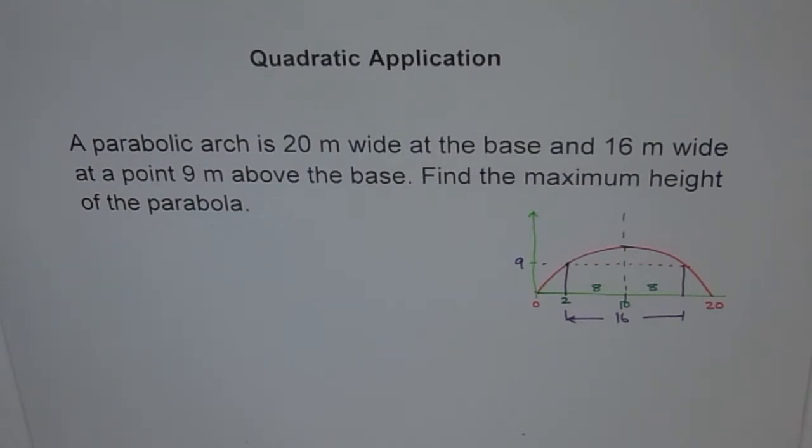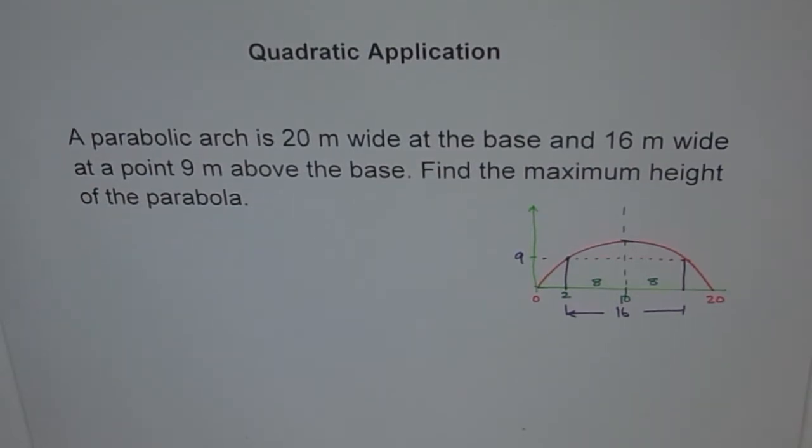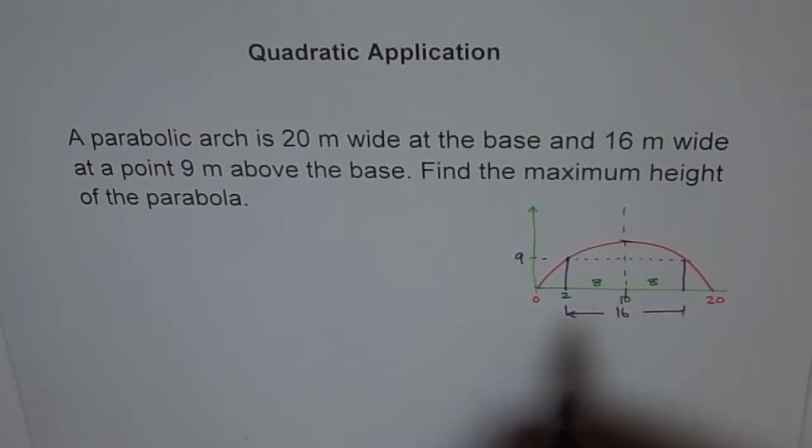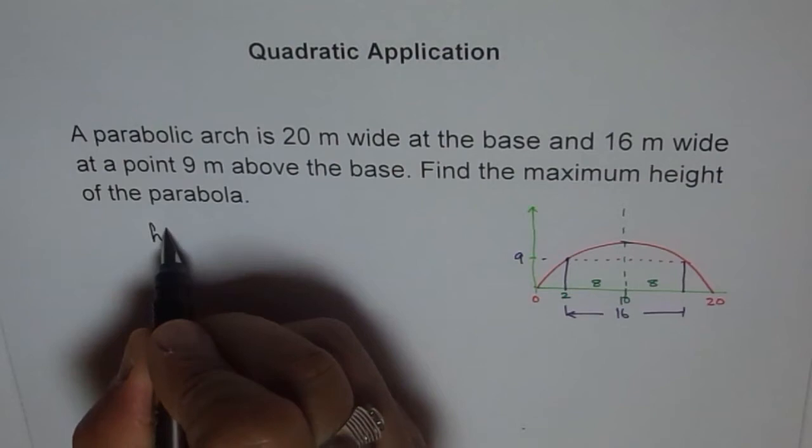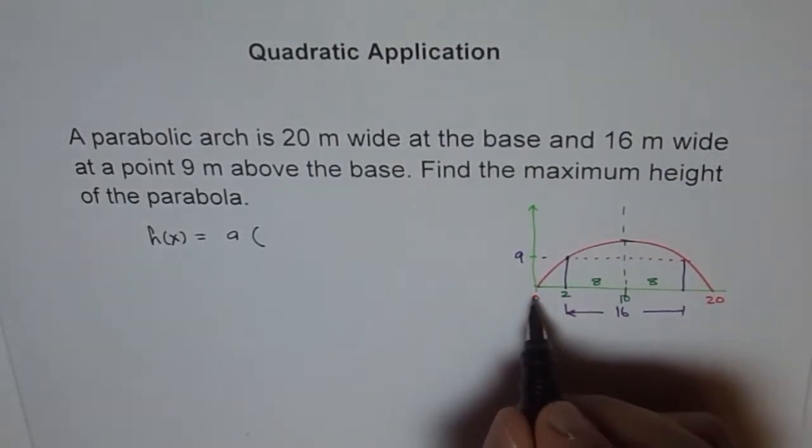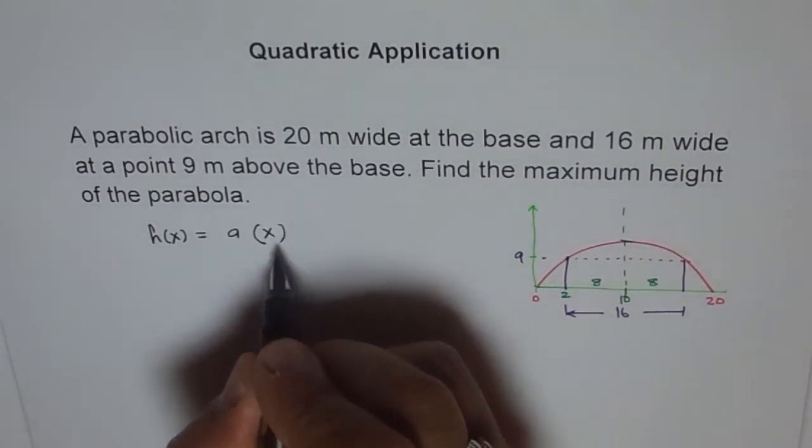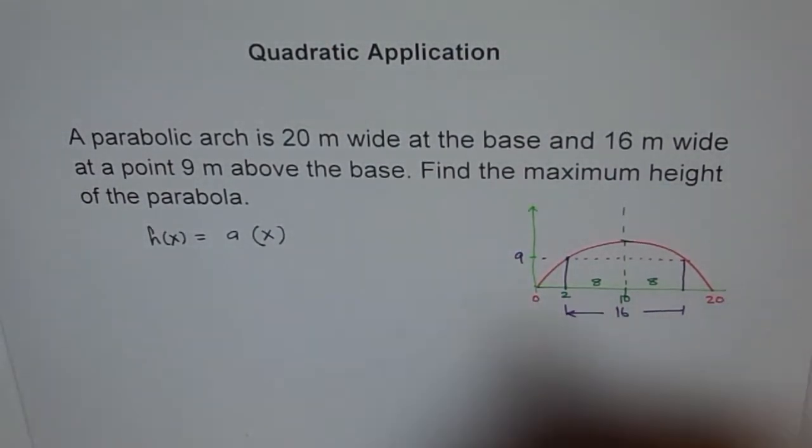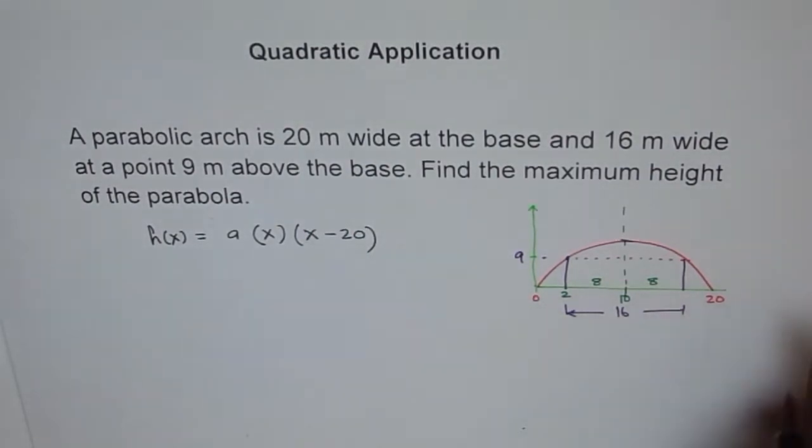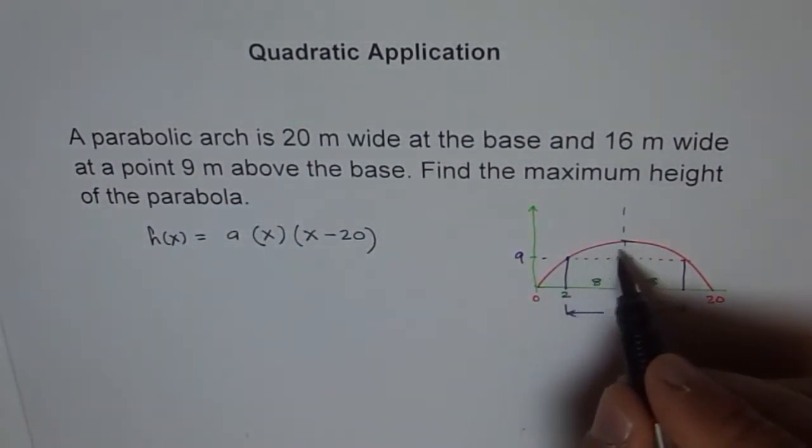So what we can do now here is that we can write our parabola in intercept form. So let's say height is a function h(x) equals a times x for first intercept, which is at 0. The other one is at 20. So let's say x minus 20. So that becomes our height of parabola, right?